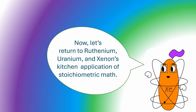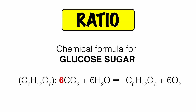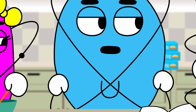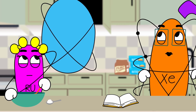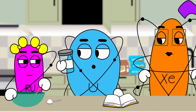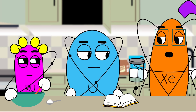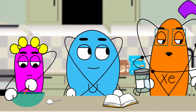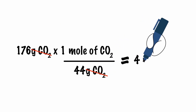Now let's return to Ruthenium, Uranium, and Xenon's kitchen application of stoichiometric math. We'll mix a ratio of 6 moles of carbon dioxide with 6 moles of water, and that will yield 1 mole of sugar with some oxygen left over. We don't need any oxygen in these cookies. Well, they do need to bake in the presence of oxygen. Mom usually keeps some carbon dioxide in here somewhere. It doesn't look like we have any left. Sure we do — carbon dioxide is an invisible gas. This jar contains 176 grams of CO2. So, 176 grams of CO2 times 1 mole of CO2 per 44 grams of CO2 equals 4 moles of CO2.